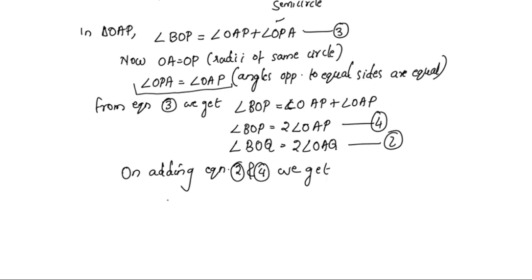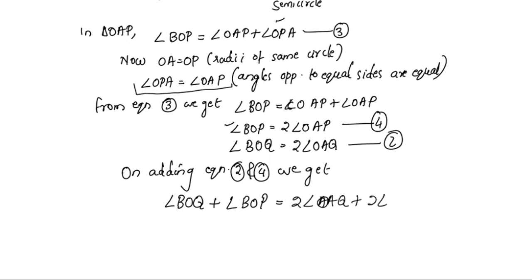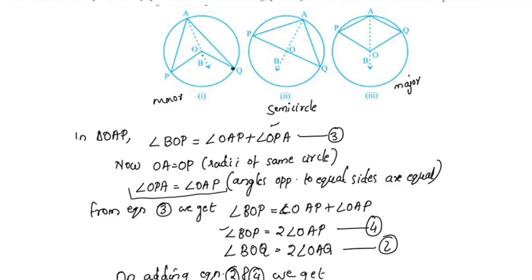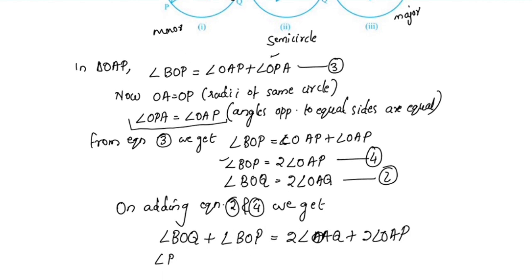Adding equation 2 and equation 4: angle BOQ plus angle BOP equals 2 times angle OAQ plus 2 times angle OAP. Taking 2 as a common factor, this gives angle POQ equal to 2 times angle PAQ.